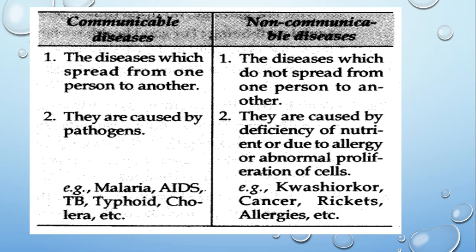Communicable diseases are caused by pathogens — basically unicellular bacteria or unicellular organisms that invade our body. Examples of communicable diseases are malaria, AIDS, TB, and typhoid.